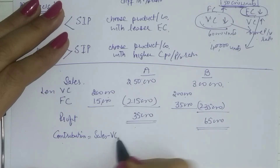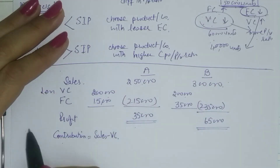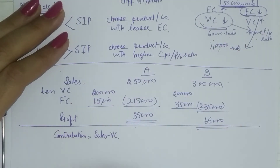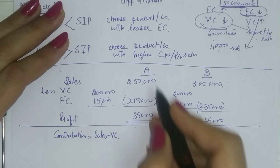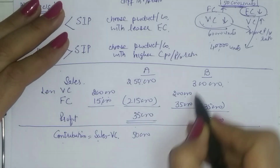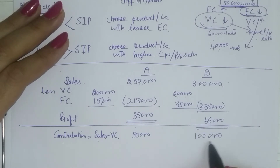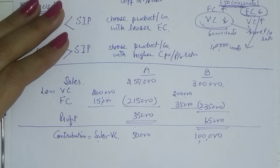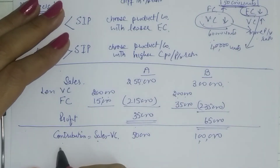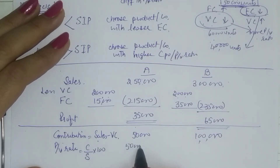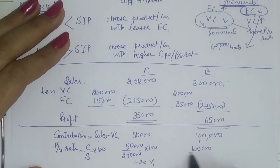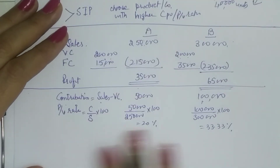Since we are not given selling price per unit, we cannot calculate information in unit terms, so we will make calculations in rupee terms only. The PV ratio is contribution divided by sales multiplied by 100. For A: 50,000 / 2,50,000 × 100 = 20%. For B: 1,00,000 / 3,00,000 × 100 = 33.33%.